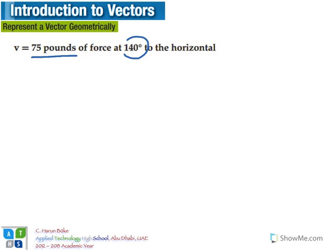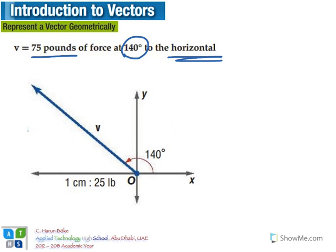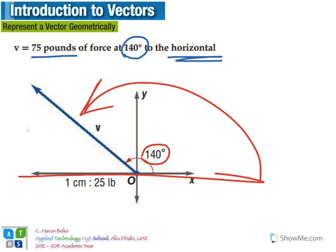Representing the magnitude never changes — you define a scale and draw the length of the arrow accordingly. But the direction differs between methods. Here it says 140 degrees to the horizontal, so we measure 140 degrees counterclockwise from the horizontal axis, which is the x-axis. This places the direction in the second quadrant.